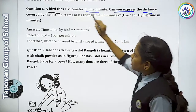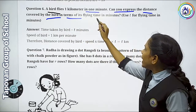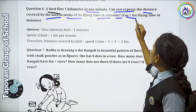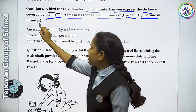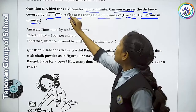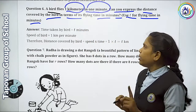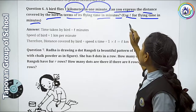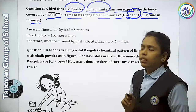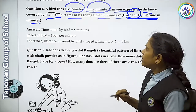Can you express the distance covered by the bird in terms of its flying time in minutes? Use T for flying time in minutes. So here a bird is flying one kilometer in one minute. We need to express this — but in what? T is what we need to take: flying time in minutes.